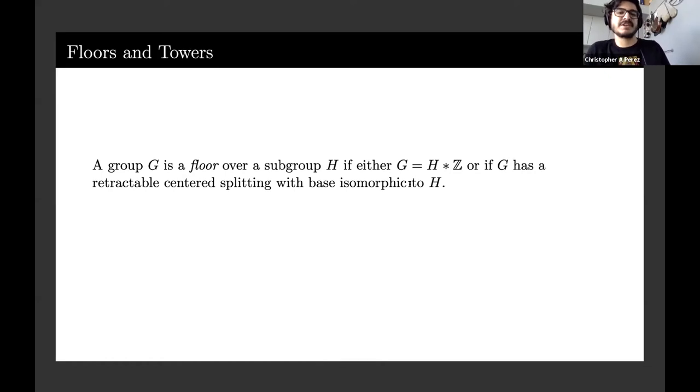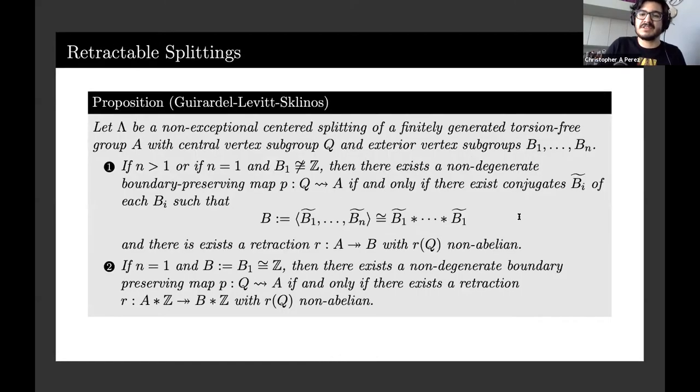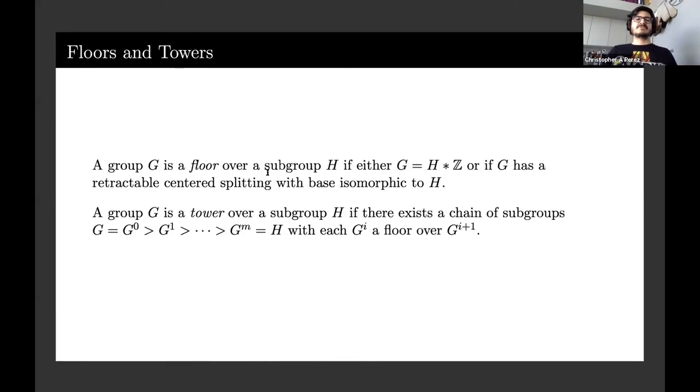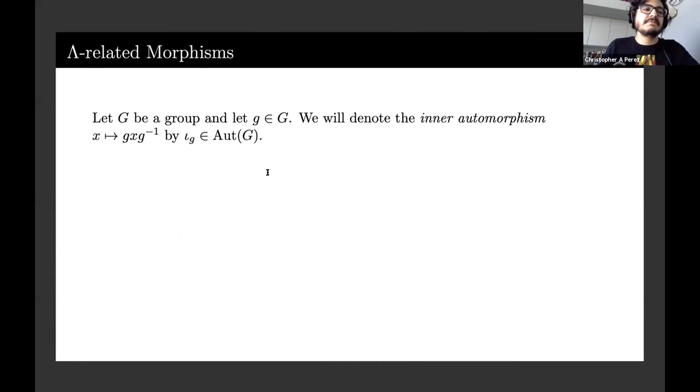Now we can finally define a floor. A group G is a floor over subgroup H if either G is a free product of H with Z, or if G has a retractable centered splitting with base isomorphic to H. A group is a tower if we can describe it as a series of floors. So how do we find floors and towers? We actually find them with what are called pre-retractions.